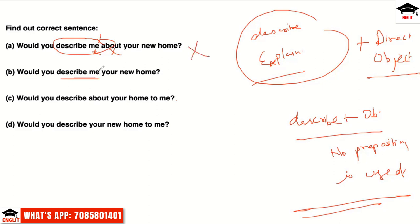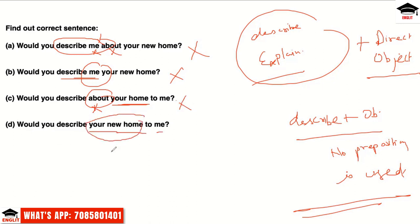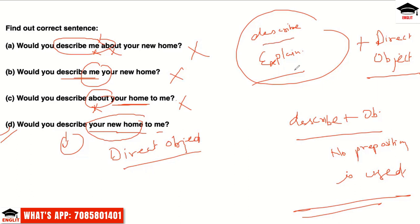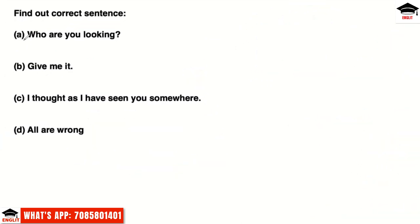Option B has an indirect object but no preposition — still wrong. Option C has the preposition 'about' — wrong. Option D: 'Would you describe your new home to me' — 'your new home' is the direct object, and the indirect object follows via 'to me'. This is the perfect answer. Remember: verbs like 'describe' and 'explain' are always used with their direct objects, not indirect objects directly.